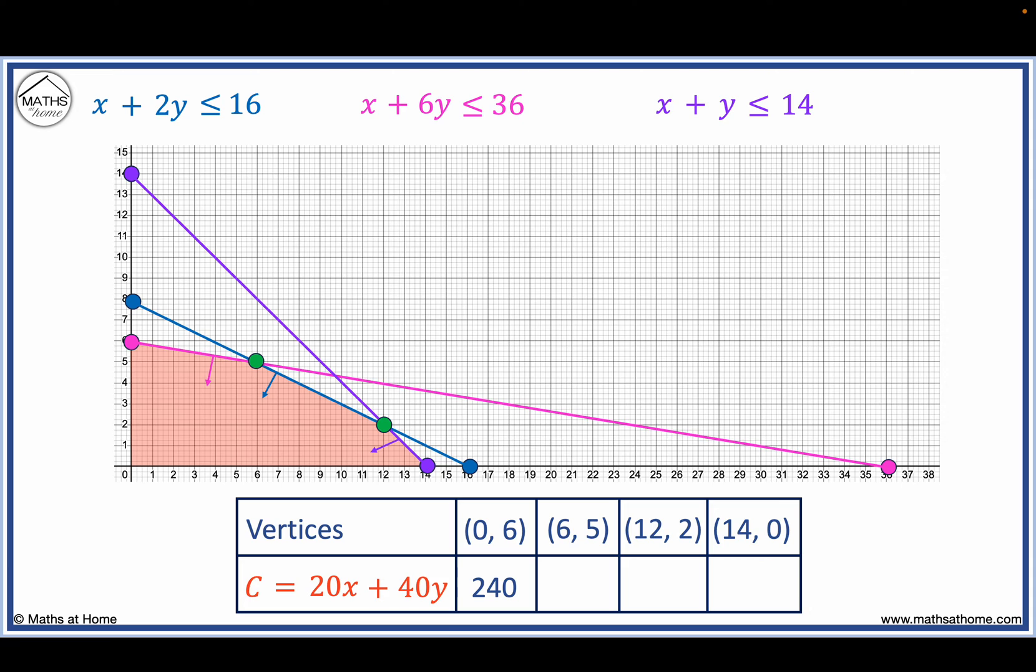When x equals 6, y equals 5, 20 times 6 plus 40 times 5 equals 320.